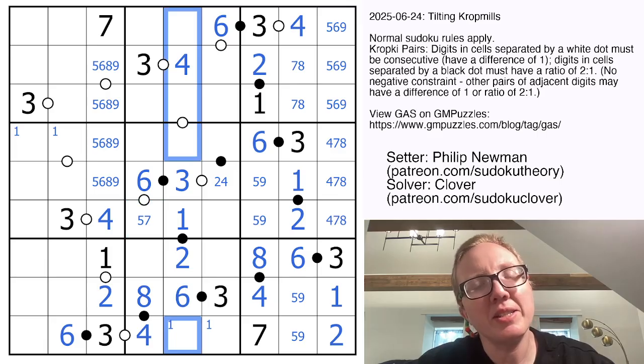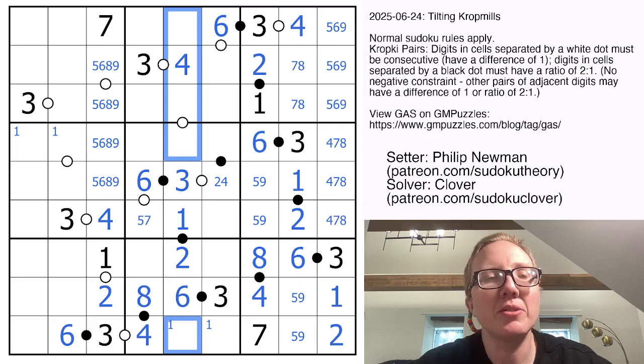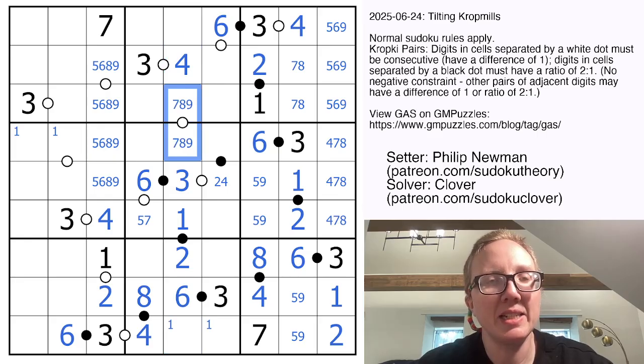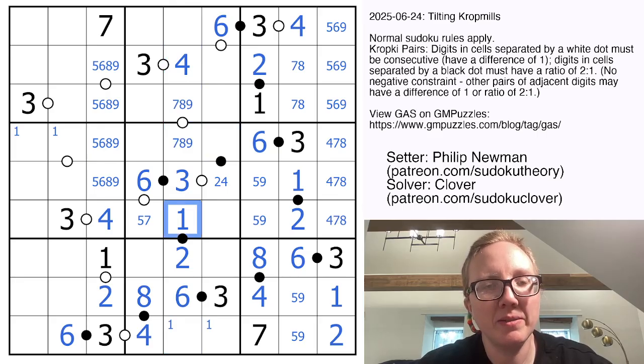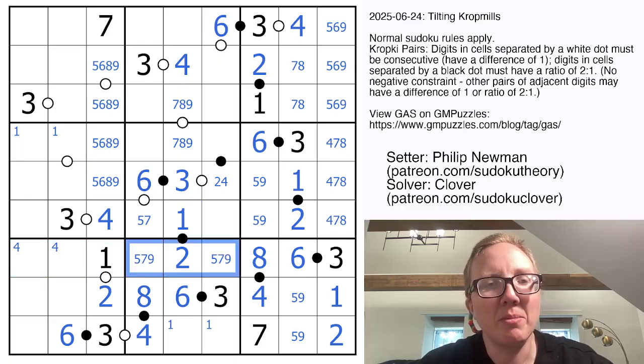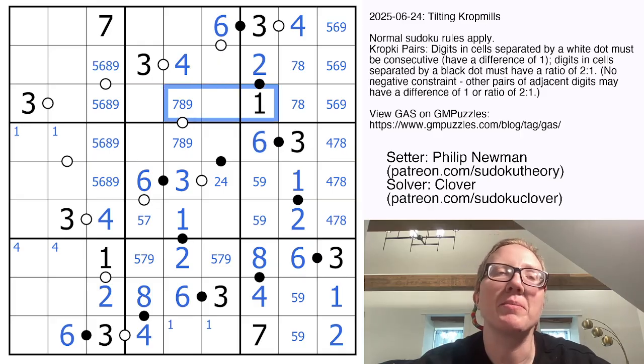Right here, the digits I still need in the column are 5, 7, 8, and 9. The pair that's consecutive here is either 7, 8 or 8, 9, and I don't know which yet. I need a 4 in one of those cells, and these are some combo of 5, 7, and 9.